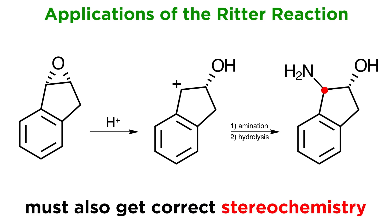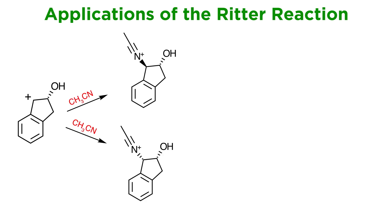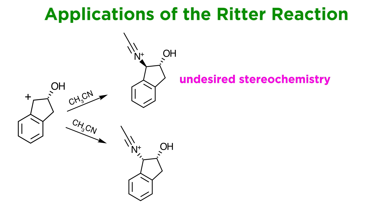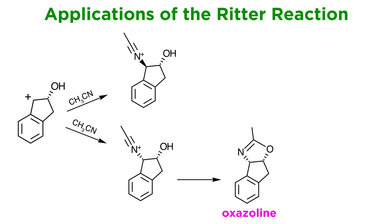The other question was about the stereochemistry. If the amination is to be carried out with acetonitrile and subsequent hydrolysis, would the acetonitrile attack from the same face as the hydroxyl, which is the desired outcome, or the opposite face? It turns out that the attack was only carried out from the same side as the alcohol, allowing the isolation of this oxazoline, which can then be hydrolyzed to give the desired product in very high yield.